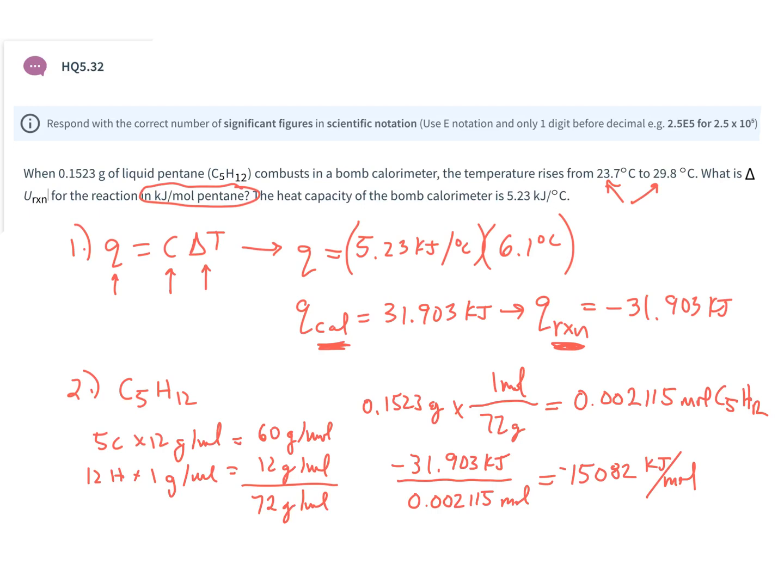For my significant figures, I've got four significant figures here, three here, and three here. So I report this to three significant figures. I would say negative 1.51 × 10^4 kilojoules per mole.